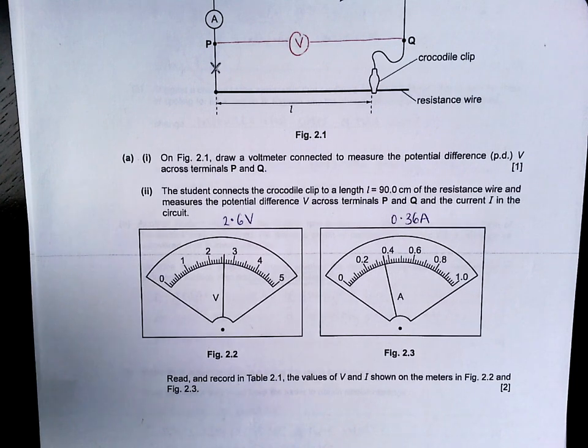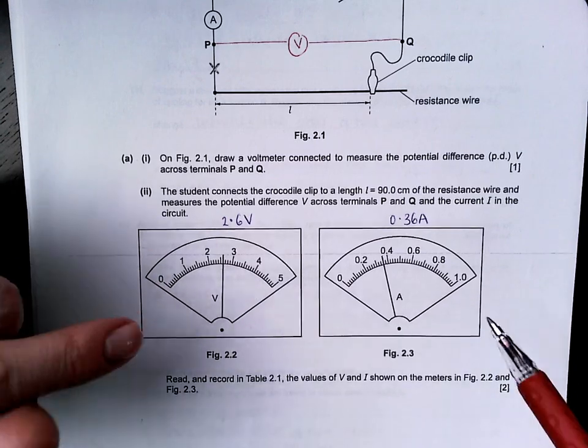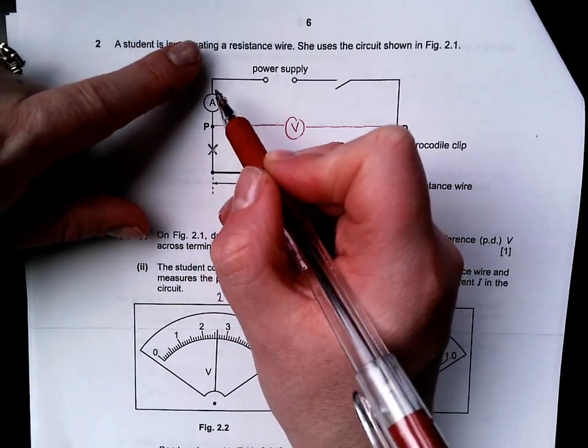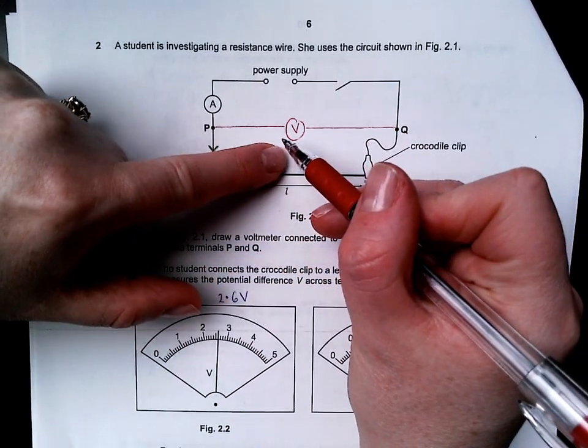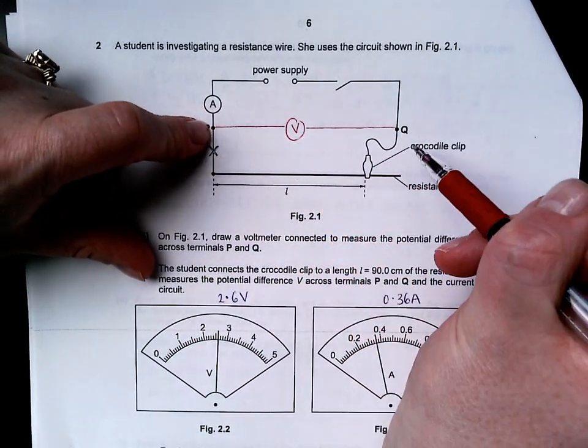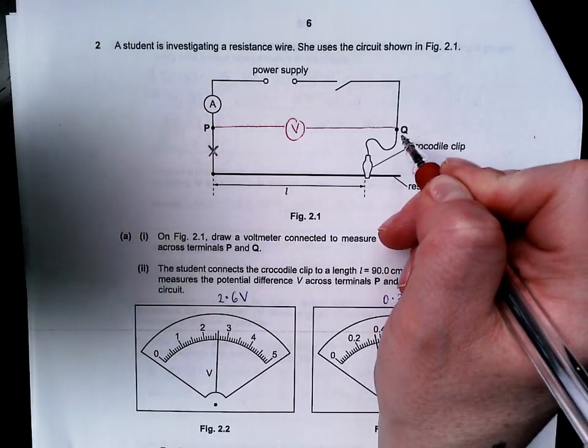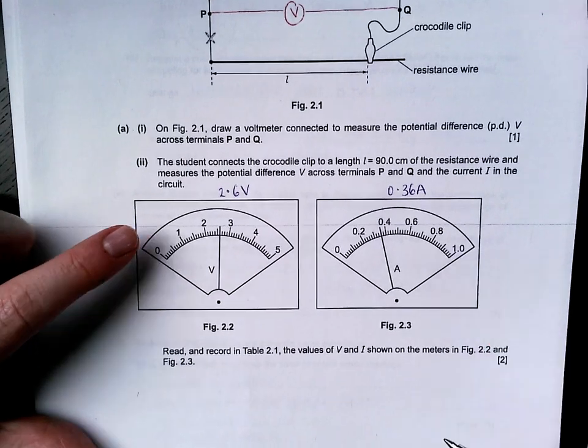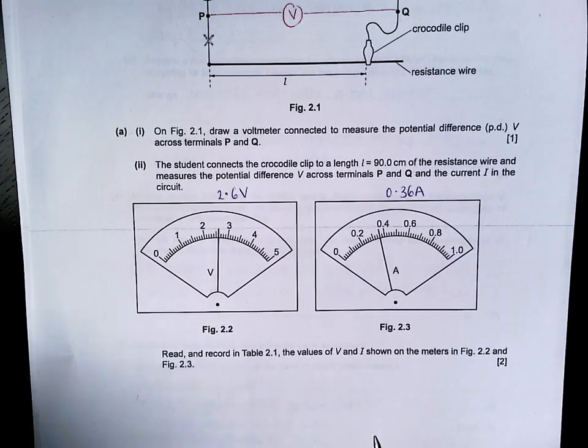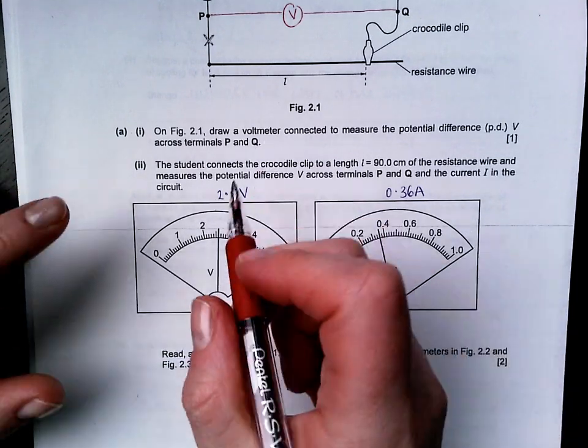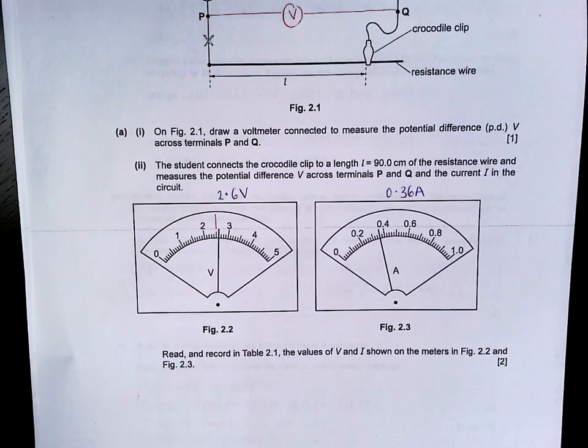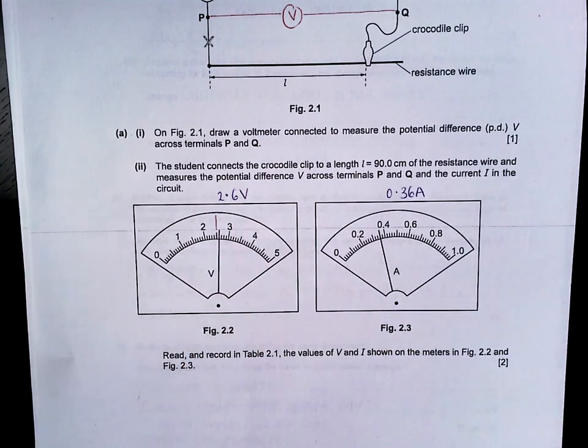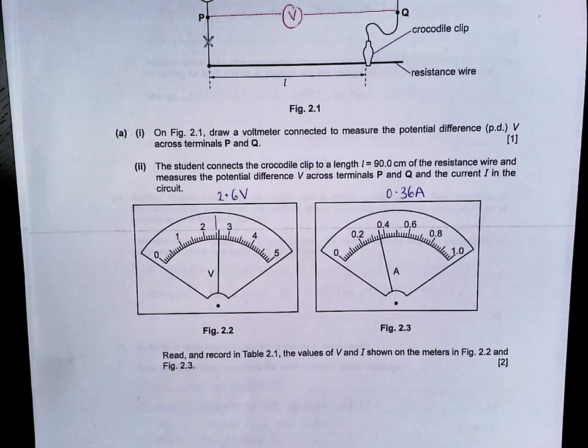The student connects the crocodile clip to a length 90 centimeters of the resistance wire and measures the potential difference across the terminals P and Q and the current I in the circuit. Ammeters are in series. Voltmeters are in parallel because they are measuring a before and an after. Now a surprising number of people did not read these scales correctly. This I think is not because you can't read a scale but because you're probably rushing.